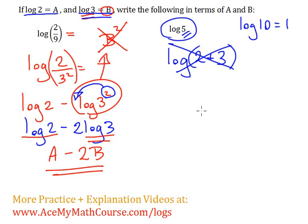Right? Why is that? Well, because let's take a look here. All these bases that we don't see here are just 10. We just have log base 10 of 2 is A, log 3 base 10 is equal to B, and we know that log of 10 base 10 is just 1.